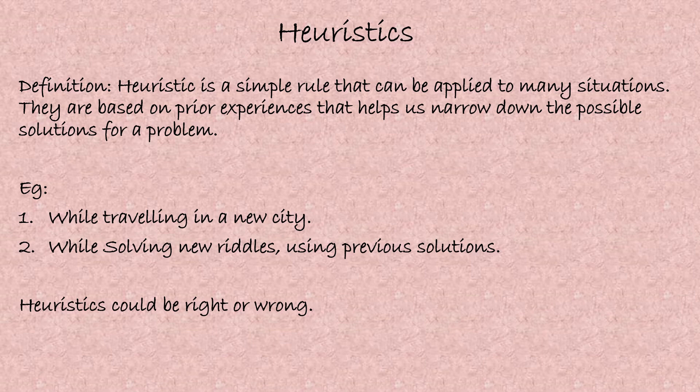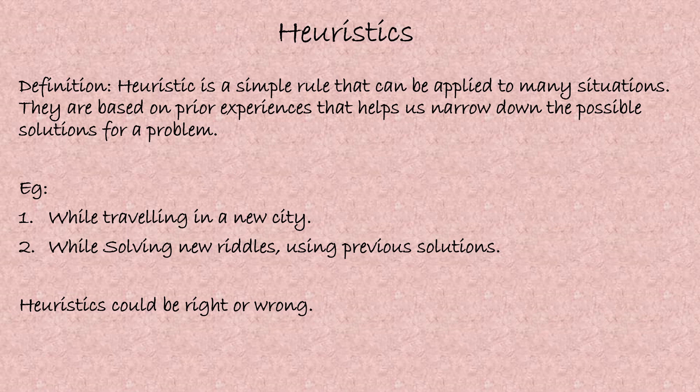Heuristics could be right or wrong, because when we are using a particular solution it won't always lead to success — at times it gives us a wrong answer as well. Not all heuristics will give us right answers; at times they can give wrong answers too. Those wrong answers also help us understand many new things about the new situation we are involved in.